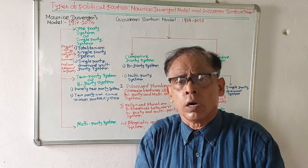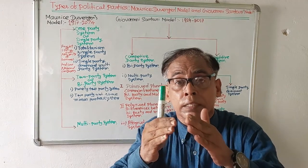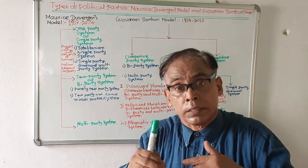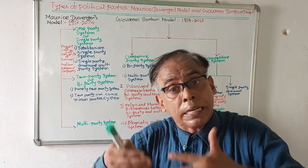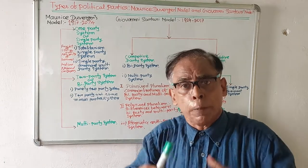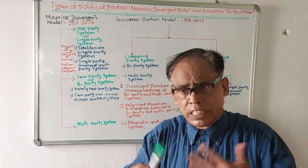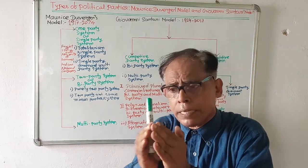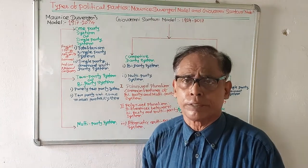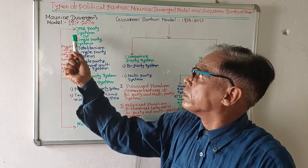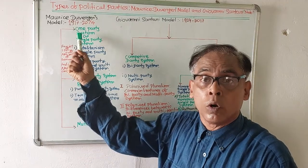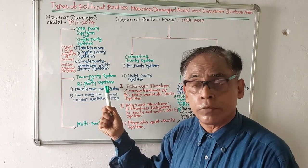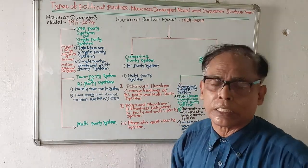Maurice Duverger has pointed out that political parties are of three types. He has developed a tripartite model of political party. He categorized political parties into three categories: single party system or one party system, two party system or bi-party system, and multi-party system.